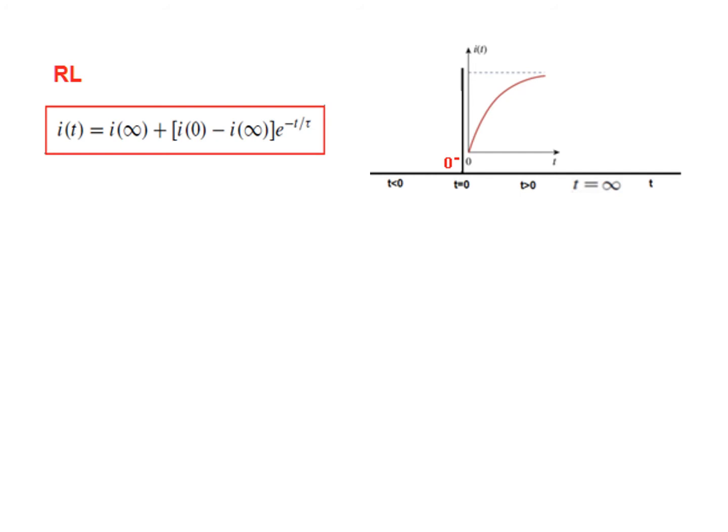As we have learned from this chapter, for an RL circuit we find the current i(t) which is given by this formula. This formula indicates the initial inductor current I(0). This is the initial inductor current I(0) and it is calculated at t equals 0 minus.